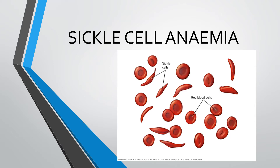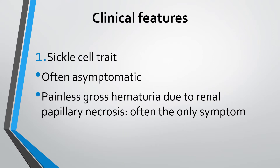Hello viewers. In this video we will continue with sickle cell anemia. In the previous video, we have seen that RBCs are normally round in shape, but they become sickle cells or crescent-shaped cells in sickle cell anemia. That was due to the abnormal beta chain present in the hemoglobin. This video will discuss the clinical features and management of a child with sickle cell disease or sickle cell anemia.